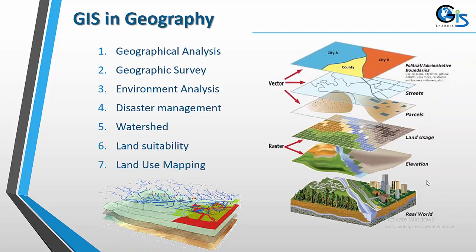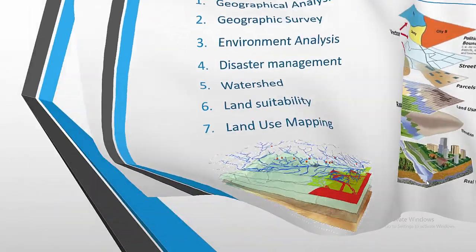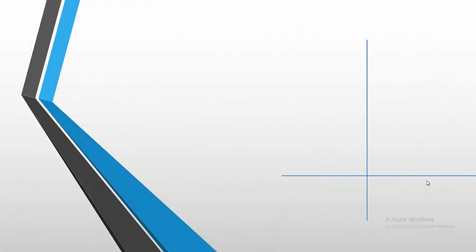GIS is being used in geographical analysis, geographic survey, environmental analysis, disaster management, watershed management, land suitability, land use mapping, and many more sectors. In this way, GIS is being applied across all types of sectors.